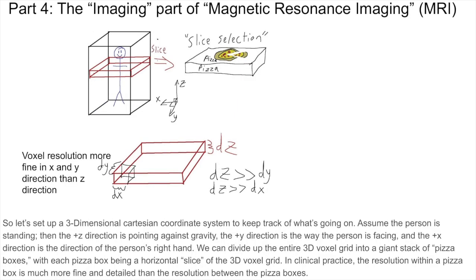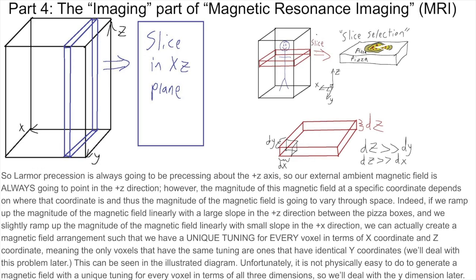So let's set up a three-dimensional Cartesian coordinate system to keep track of what's going on. Assume the person is standing: the plus Z direction is pointing against gravity, the plus Y direction is the way the person is facing, and the plus X direction is the direction of the person's right hand, as indicated in the diagram. We can divide up the entire 3D voxel grid into a giant stack of pizza boxes, with each pizza box being a horizontal slice of the 3D voxel grid. In clinical practice, the resolution within a pizza box is much more fine and detailed than the resolution between pizza boxes. Larmor precession always precesses about the plus Z axis, so our external ambient magnetic field always points in the plus Z direction.